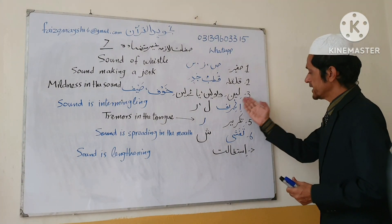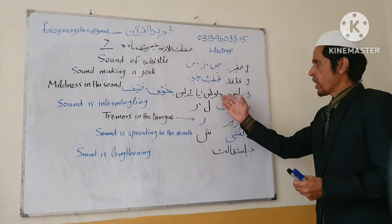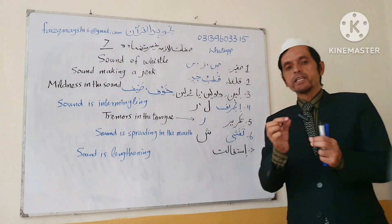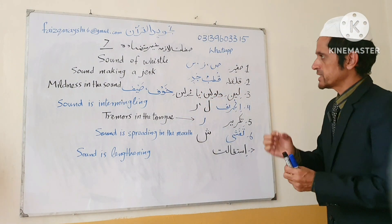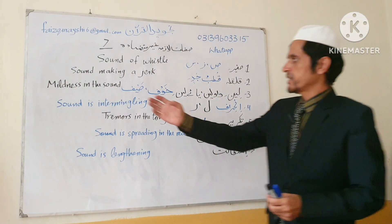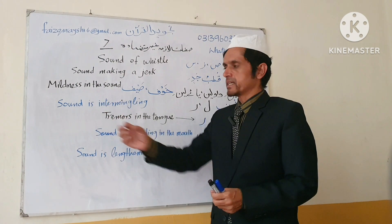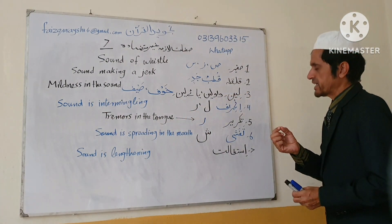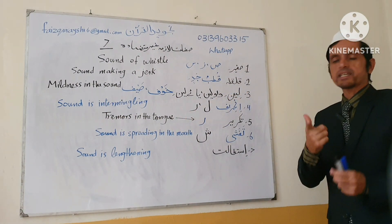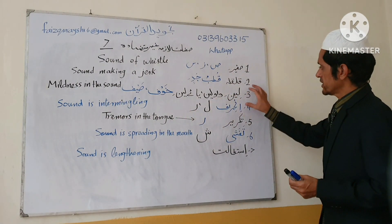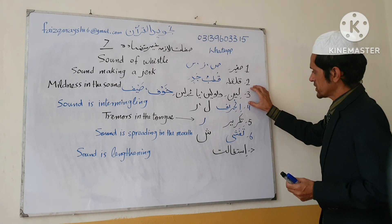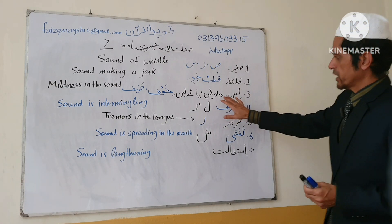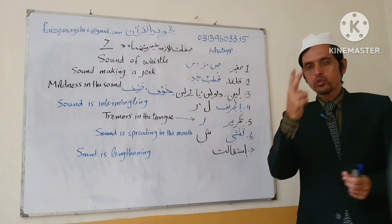Number three is Lean — Wawe Lean and Yae Lean. Lean means mildness or softness in the sound. This characteristic is found in only two letters: Wawe Lean and Yae Lean.